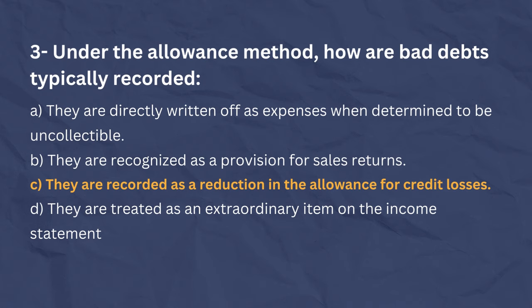The correct answer is C. Under the allowance method, when specific accounts receivable are determined to be uncollectible, they are written off by reducing the allowance for credit losses. This write-off does not directly impact expenses, as the reduction in gross accounts receivable and the allowance are the same.